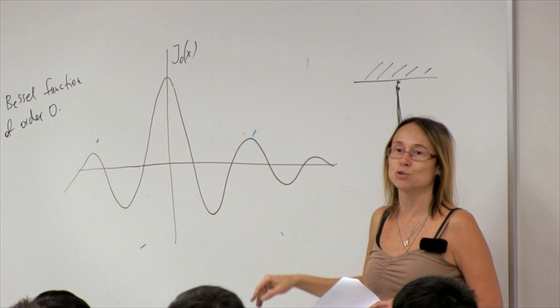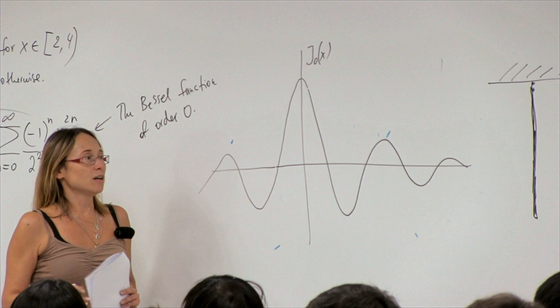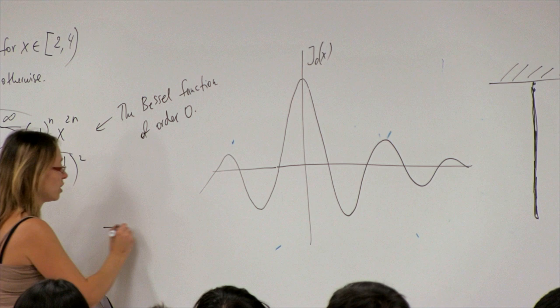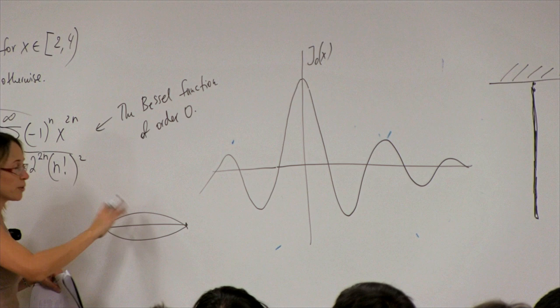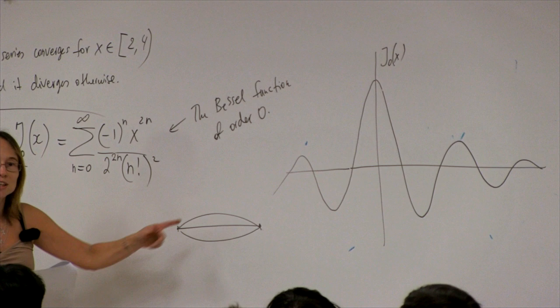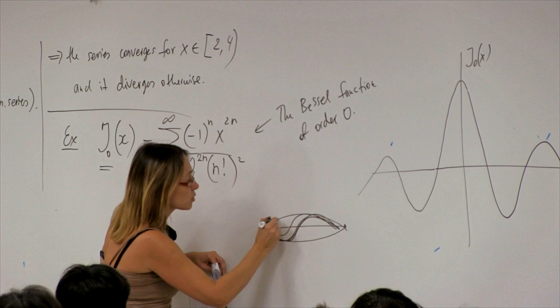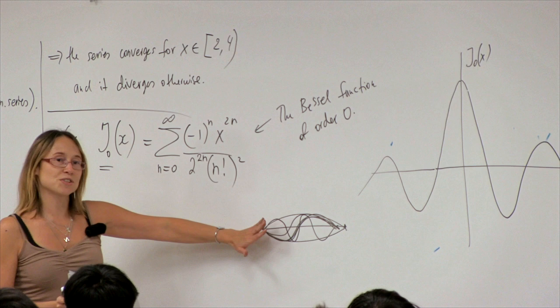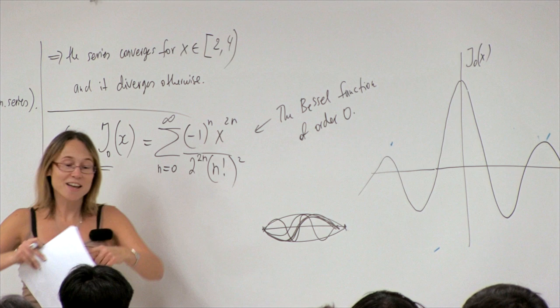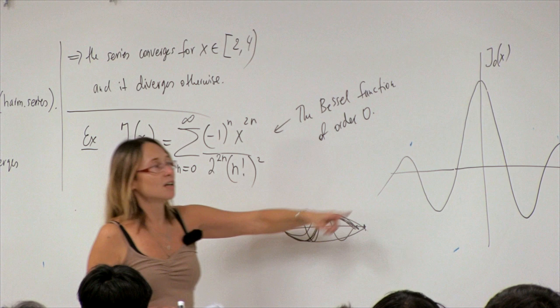Another application: if you play violin, you have a string that vibrates when you create a note, fixed at one end. Putting your finger at different positions creates harmonics. A two-dimensional generalization of a violin string is a drum — a circular membrane. When you push it, it oscillates vertically, and the shape of its different harmonics is given by the Bessel function.